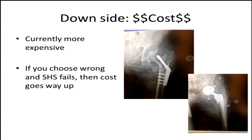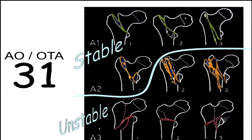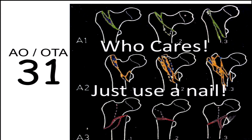Susan mentioned cost as a downside for the nail. Sure, currently it's more expensive. But if you guess wrong and use the wrong implant and it fails, then the cost significantly goes up in the care of that patient. So we talk about whether it's stable or unstable to help determine implants — I say, who cares? Just nail it.